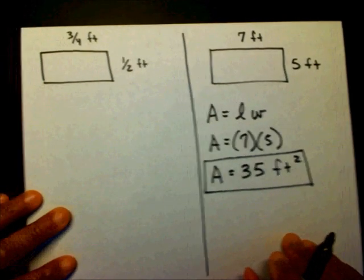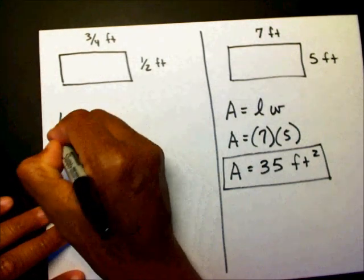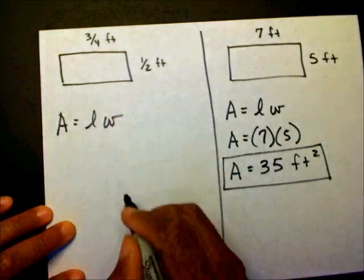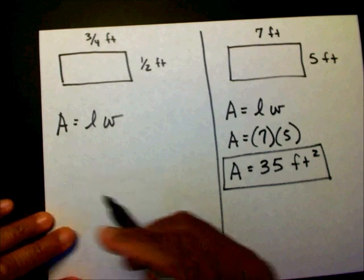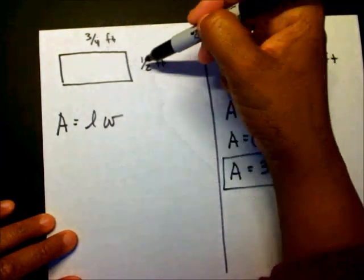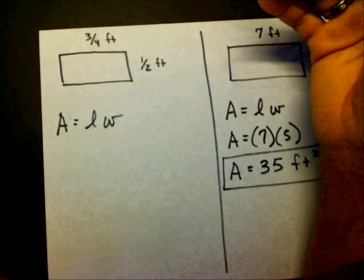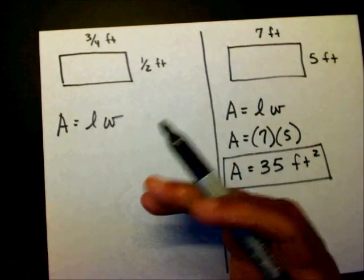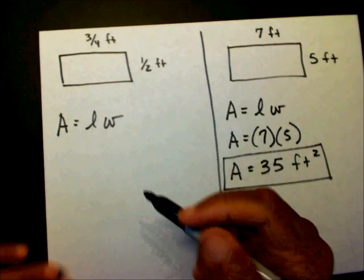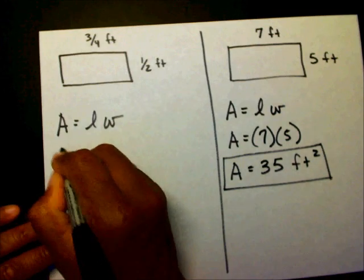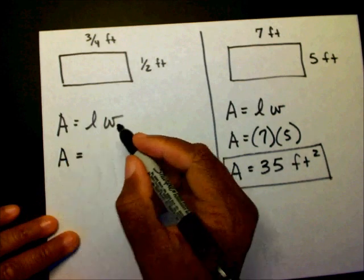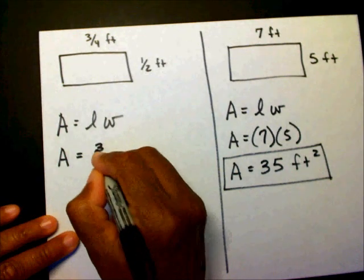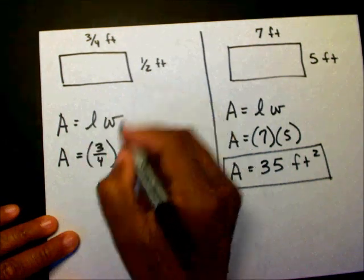Okay, let's go back over here. A equals length times width. If you have not watched my video on how to multiply fractions, I'd rather recommend you watching that video first before you do this problem. Okay, so A equals, the length is 3 fourths and the width is 1 half.